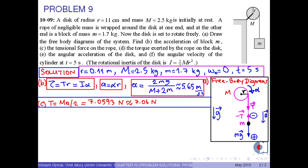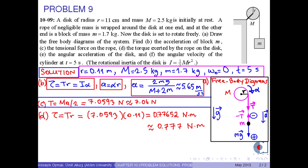To find the torque exerted by the rope on the disk, we use the formula tau equals capital T times r. Inserting the numerical values, we obtain the torque as approximately 0.777 newton meters.